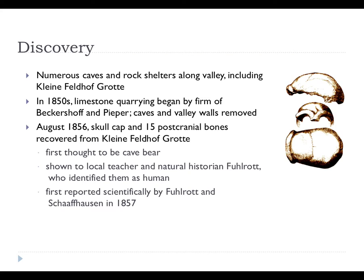There were numerous caves and rock shelters along the valley. In the 1850s, as part of industrialisation, limestone quarrying began. In August 1856, a skull, a calvarium, and 15 post-cranial bones were recovered from the Kleiner Feldhof grotto. Initially thought to be a cave bear, they were shown to a local natural historian, Fullrott, who recognised them as human — a strange fossil human. They were first reported scientifically by Fullrott and Schaffhausen in 1857.